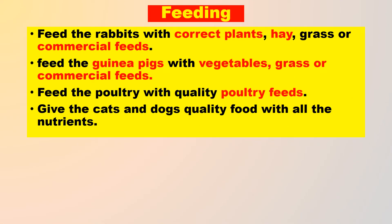Feeding: Feed the rabbit with correct plants, hay, grass, or commercial feeds. Feed the guinea pigs with vegetables, grass, or commercial feeds. Feed the poultry with quality poultry feeds. Give the cat and the dog quality food with all the nutrients.